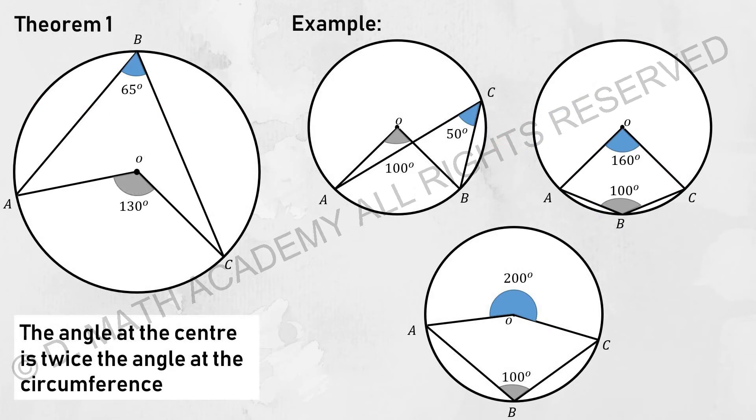For circle theorem itself, I mainly break it into four parts. For the first one, the angle at the center is actually twice the value of angle at the circumference. The common thing is where this angle of the circle itself would involve the center of the circle.